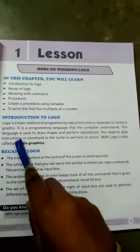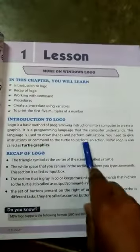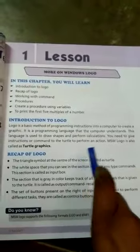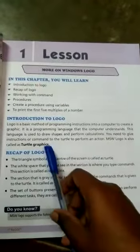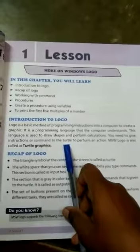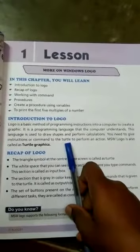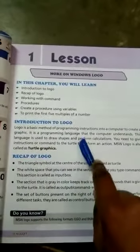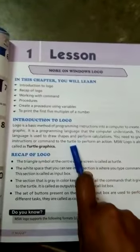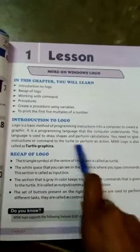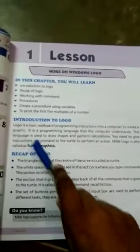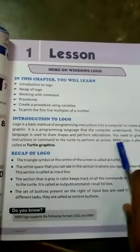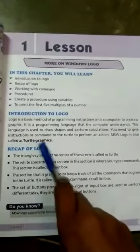You need to give instructions or commands to the turtle to perform an action. Normally, the computer uses a mouse — if you use the mouse, you can click the arrow mark. In Logo, the turtle acts as a programming function responding to instructions. The MSW Logo is also called Turtle Graphics.